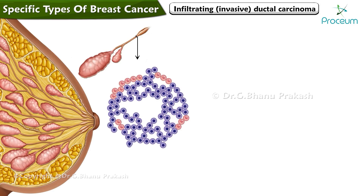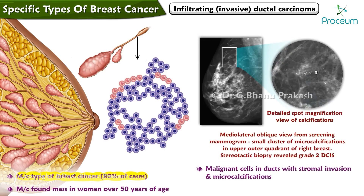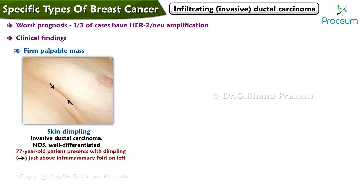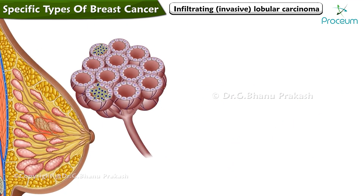Infiltrating invasive ductal carcinoma is the most common type of breast cancer, accounting for 80% of cases, and is the most commonly found mass in women over 50. It is characterized by malignant cells in ducts with stromal invasion, microcalcifications, and a fibrotic response in surrounding breast tissue. It carries the worst prognosis of any breast tumor, with one-third of cases showing HER2/neu amplification.